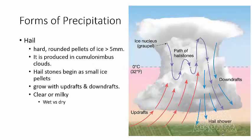Hail starts out as an ice particle up in the top of the cloud. It starts to fall down, collecting more and more, getting bigger and bigger. But then the updraft pushes it back up. It collects more on its way up, more on its way back down, another updraft, and it keeps collecting more and more.